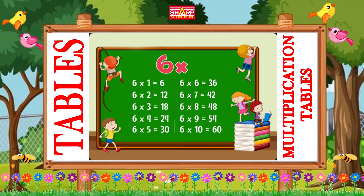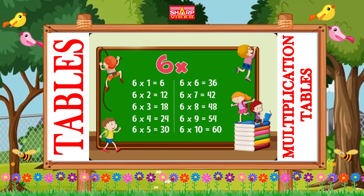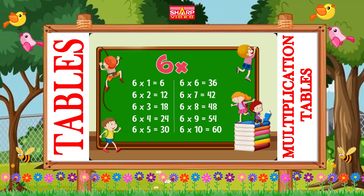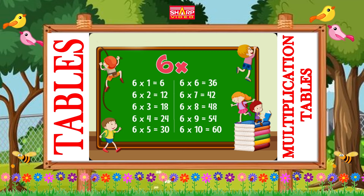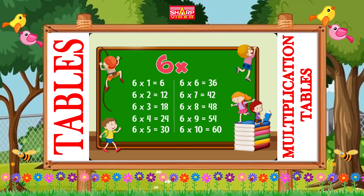Six table. Six ones are six, six twos are twelve, six threes are eighteen, six fours are twenty-four.